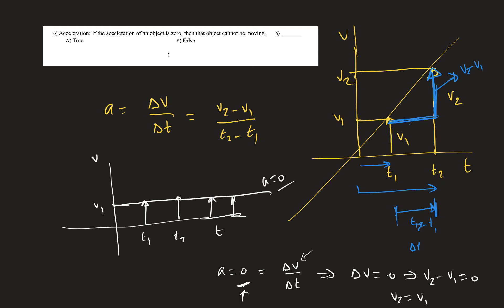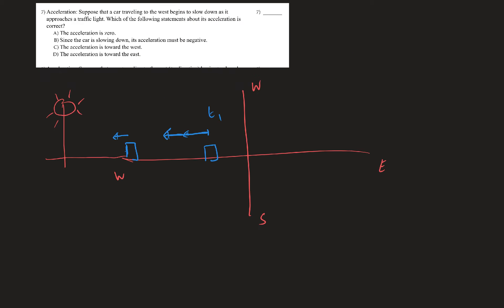The question asks: if acceleration is zero, can the object be moving? That is FALSE. Zero acceleration means velocity is constant, not necessarily zero. There is a special case where velocity is zero and acceleration is zero (object at rest), but in general, zero acceleration means constant non-zero velocity. For example, moving at 30 m/s with zero acceleration means staying at 30 m/s forever.